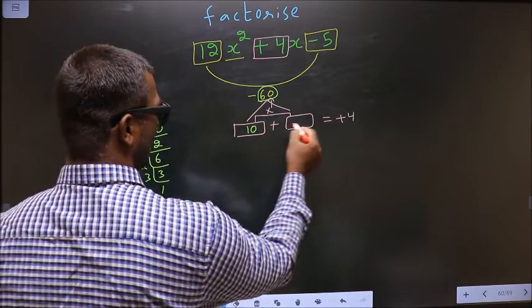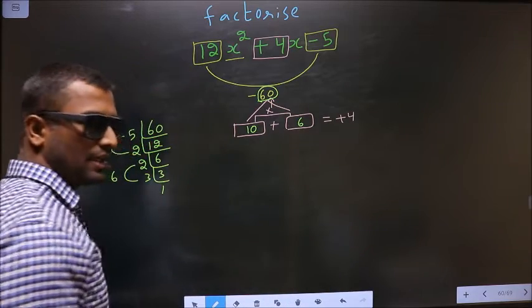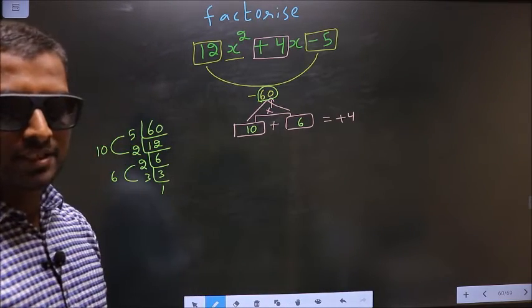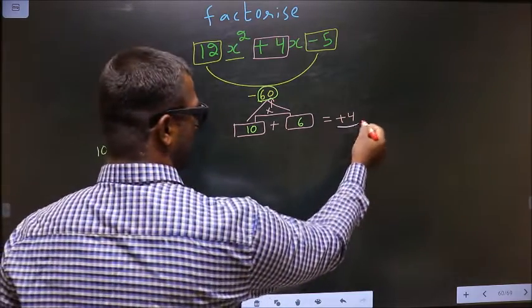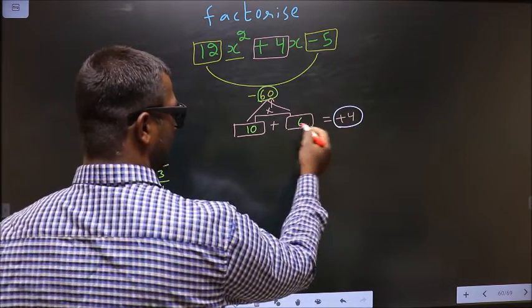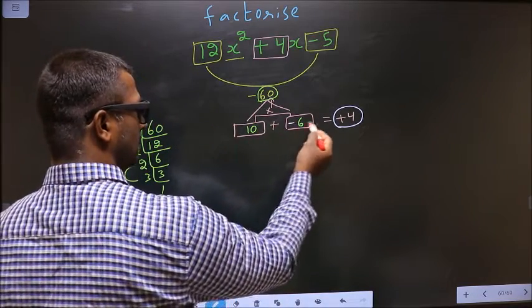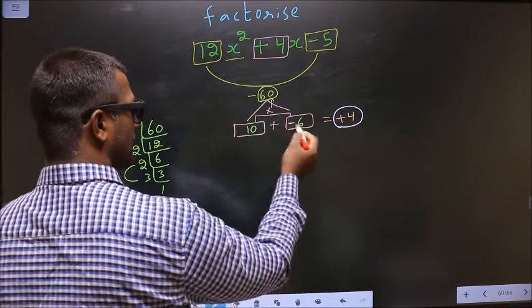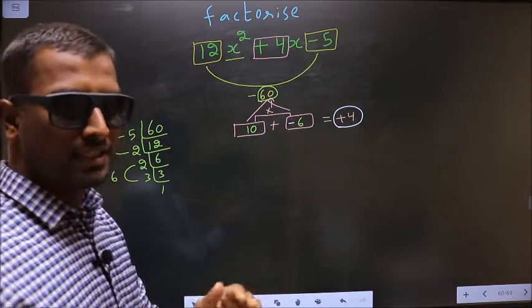Now you should adjust the signs. What I mean is here you should get +4. To get +4 you should put negative before 6. 10 minus 6 is +4, 10 into -6 is -60. So now the signs are adjusted.